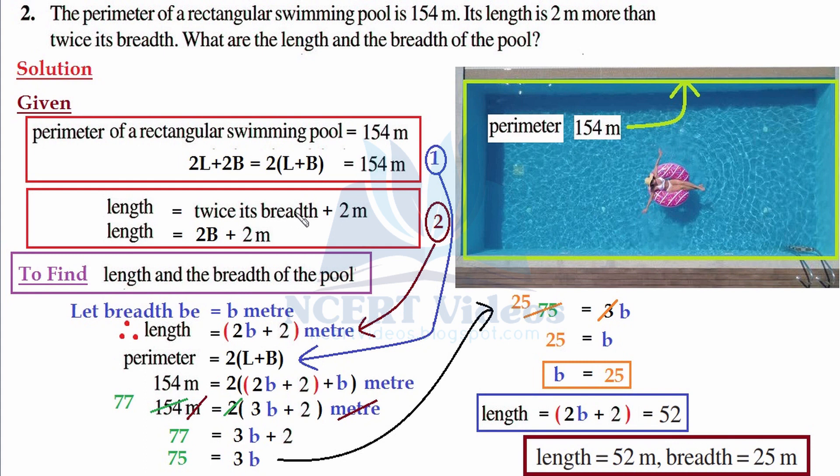Here, length is dependent on breadth because length has been told to you in terms of breadth. Therefore it is the independent quantity here and this is dependent. It's very similar with your life: you are not independent right now.